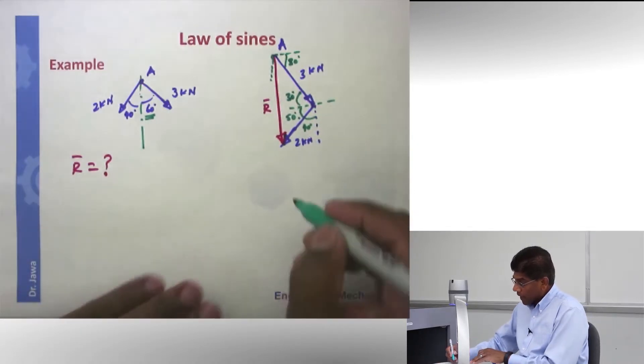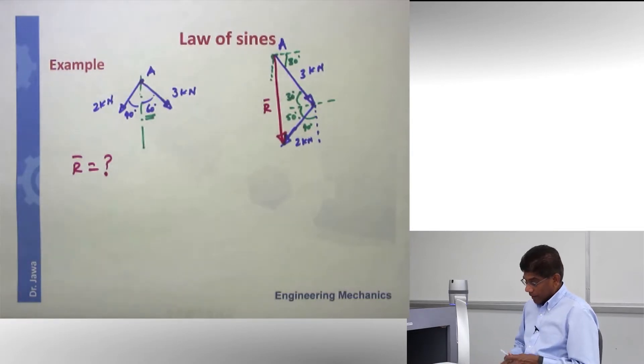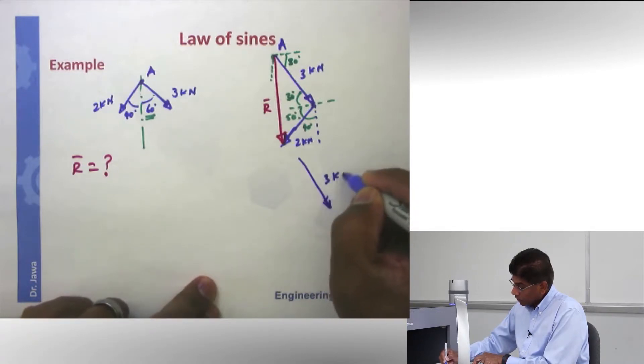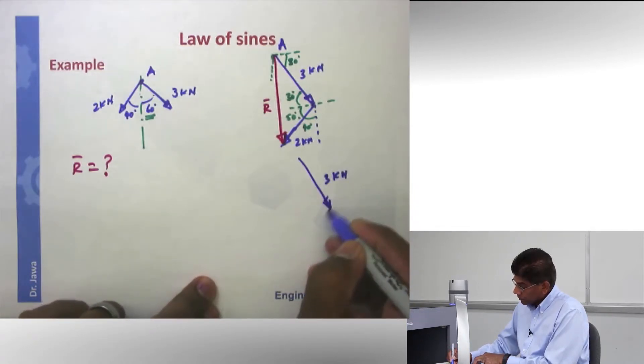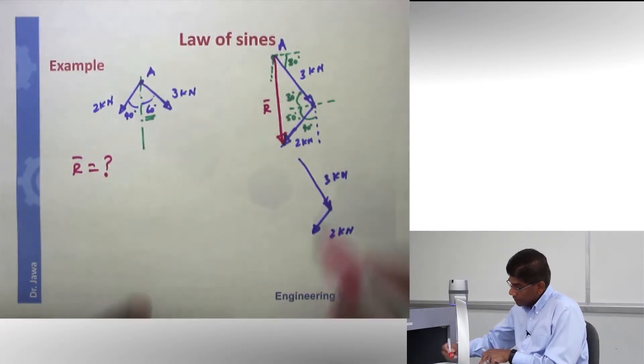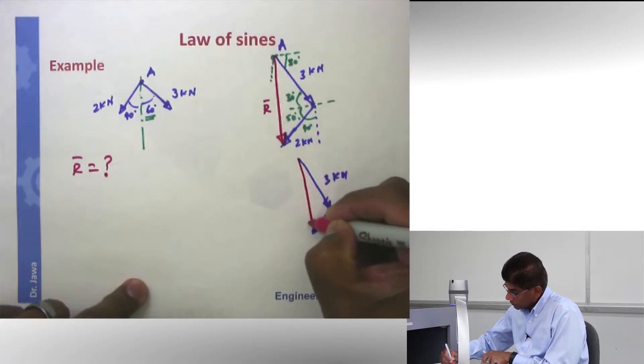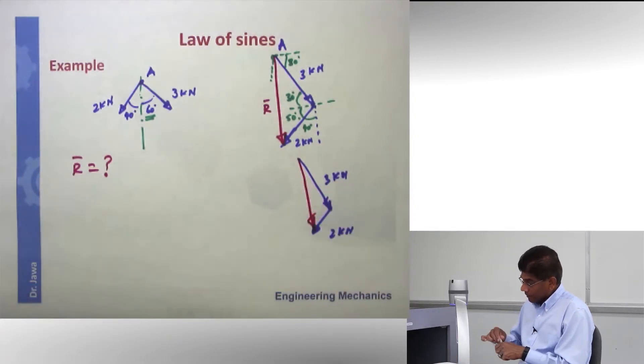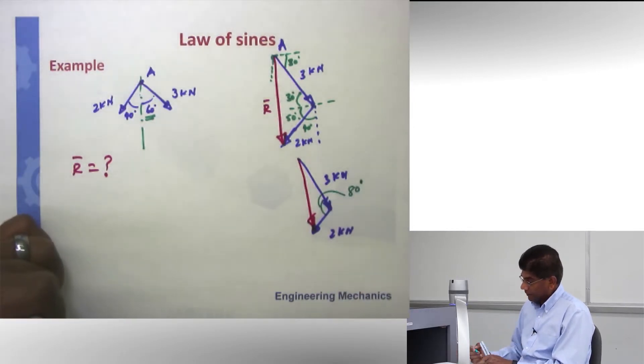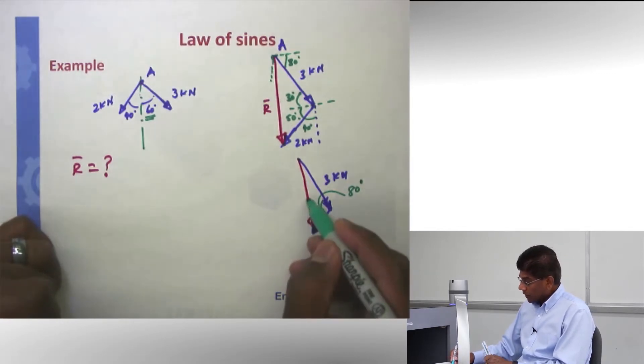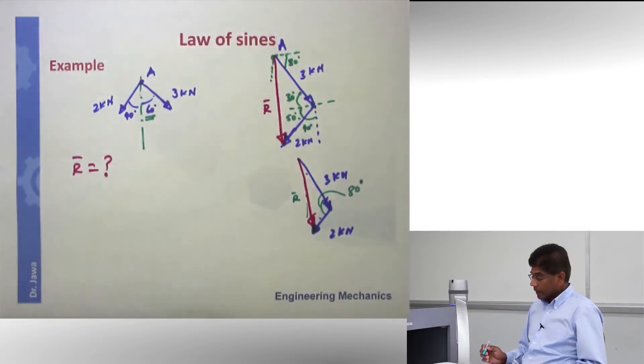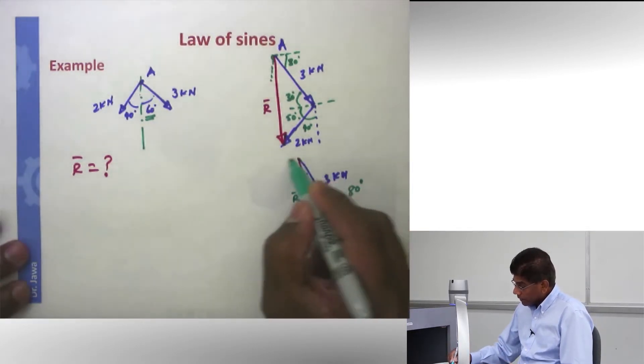Now let me draw one more diagram so you are not confused with all this information. This is my 3 kilonewton force. And this is my 2 kilonewton force. And my resultant is this. And this angle, we figured out as 80 degrees. So we need to find out my resultant force, which is this R, as well as probably these angles. And this is my horizontal line.